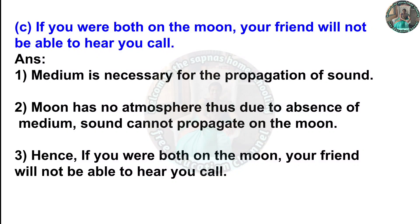(c) If you were both on the moon, your friend will not be able to hear your call. Answer: A medium is necessary for the propagation of sound. The moon has no atmosphere, thus due to the absence of a medium, sound cannot propagate on the moon. Hence if you were both on the moon, your friend would not be able to hear your call.